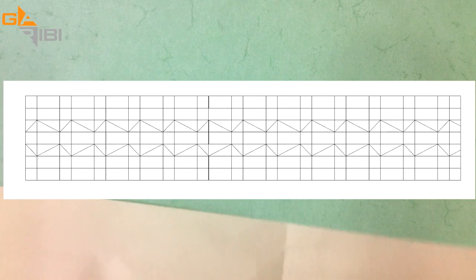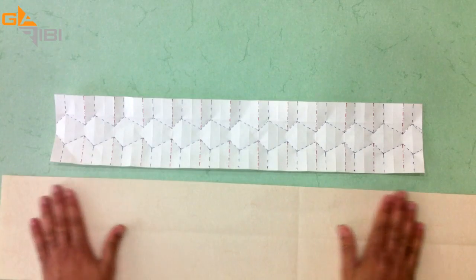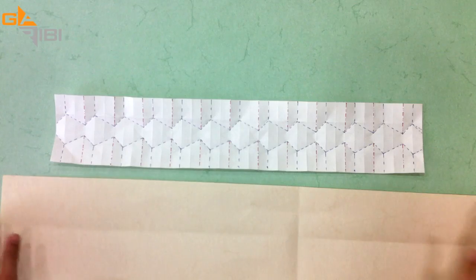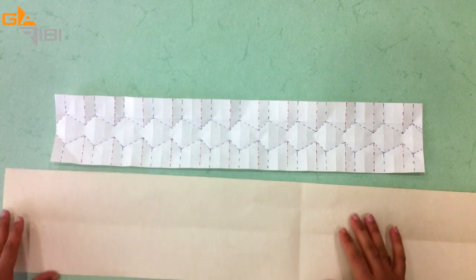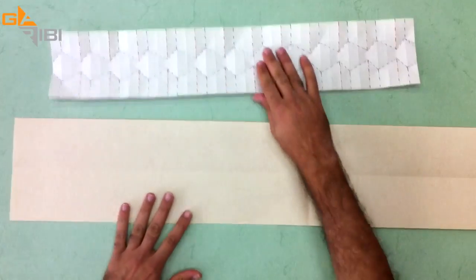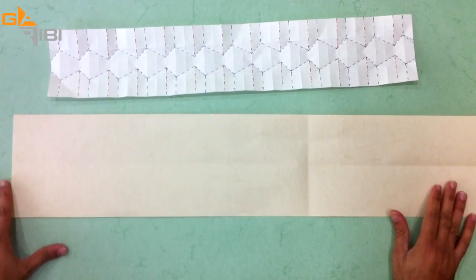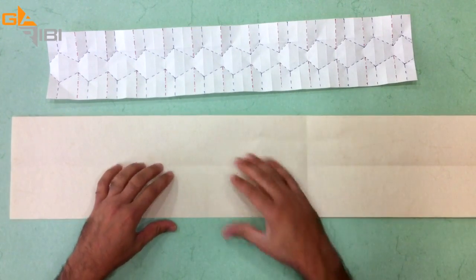I'm going to use this piece of paper. It's 16 by 80 centimeters, so it's keeping the ratio of one to five, and it's quite easy to divide it to eight.